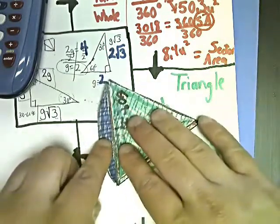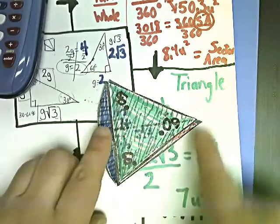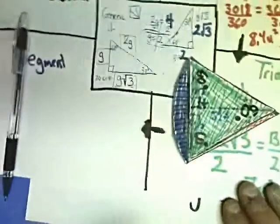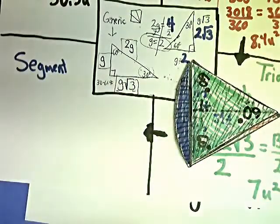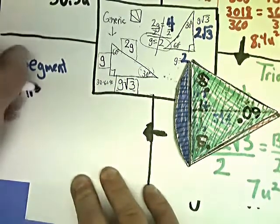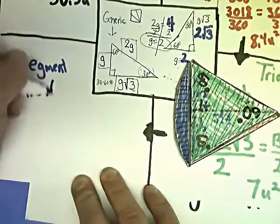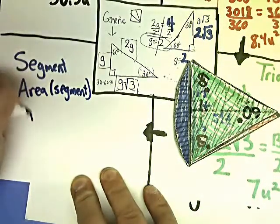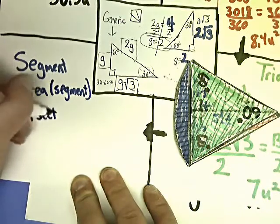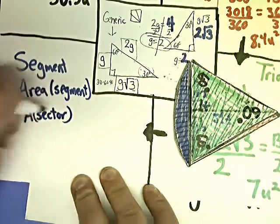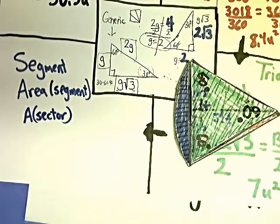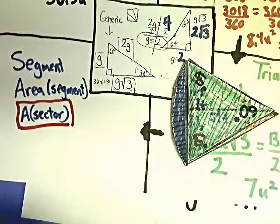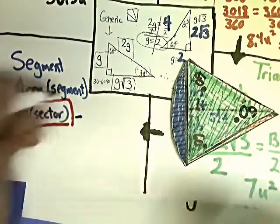And that kind of makes sense, because look at the physical picture. If this whole thing is just 8.4, and this big section of it is 7, that seems reasonable.